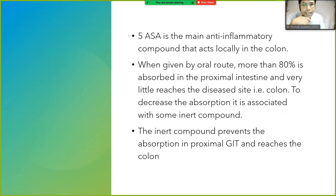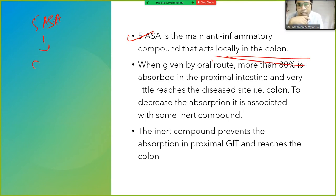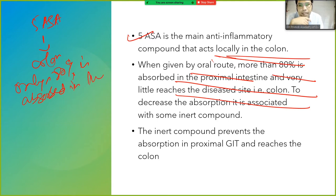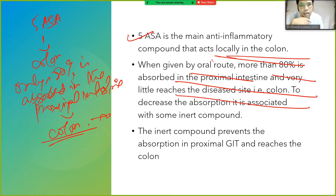5-ASA is the main anti-inflammatory compound that acts locally in the colon. However, when given by the oral route, more than 80% is absorbed in the proximal intestine and very little reaches the disease site, which is the colon.